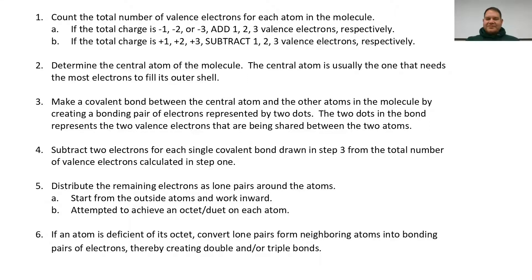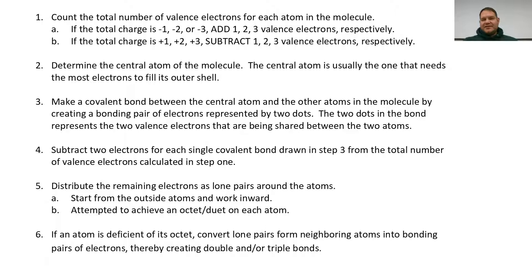Step two: determine which atom should be your central atom — the atom that all the other elements bond to. It's usually the atom that needs the most electrons to fill its valence shell. For water, oxygen needs two more electrons to fill its valence shell while hydrogen only needs one, so oxygen is placed in the center.